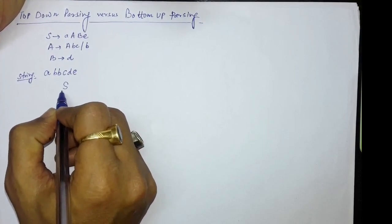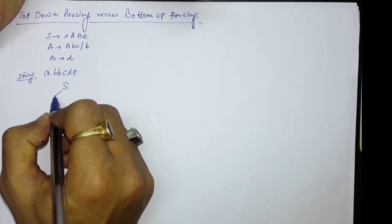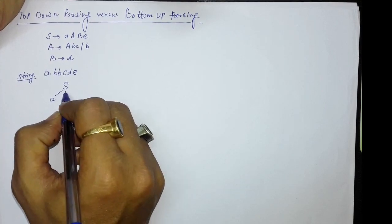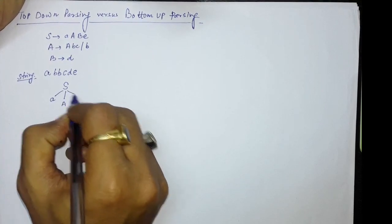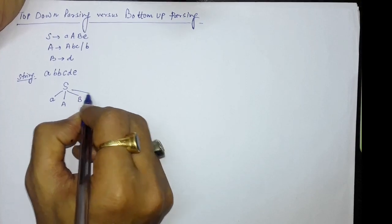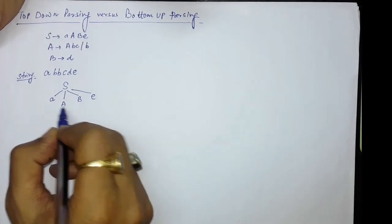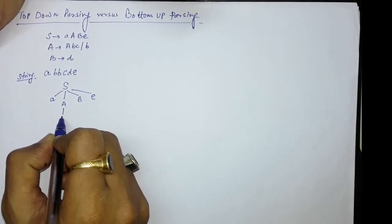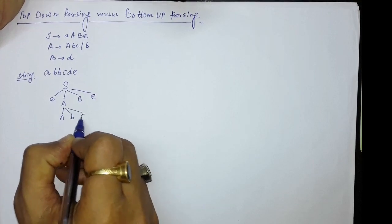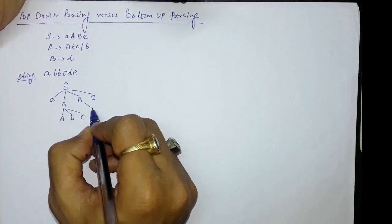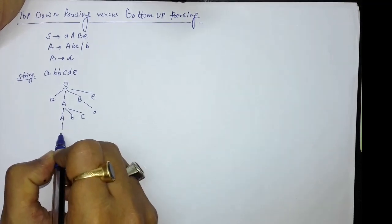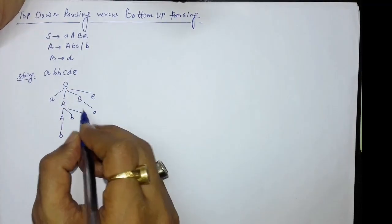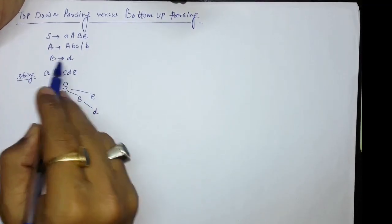In top-down parsing we start with the start symbol and derive the string from it. We take the first production: S produces small a, capital A, capital B, small e. Then capital A produces capital A, small b, small c. In the next step, this A is derived as small b — A produces small b — and for B, B produces D according to that production.